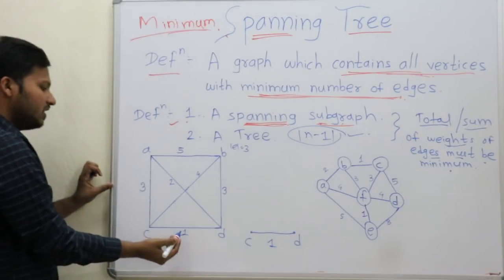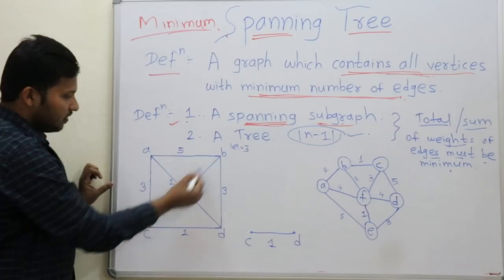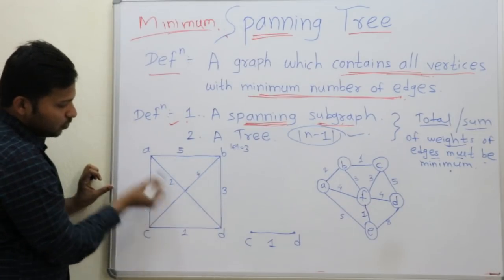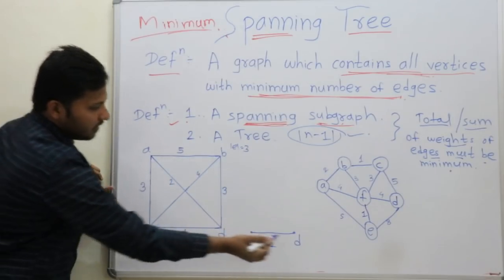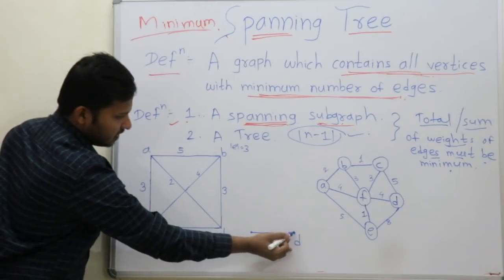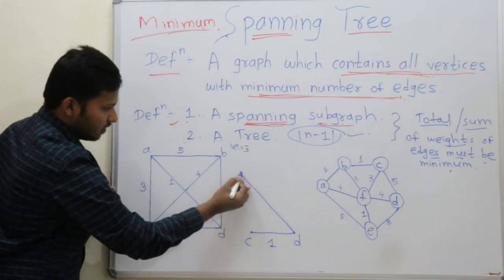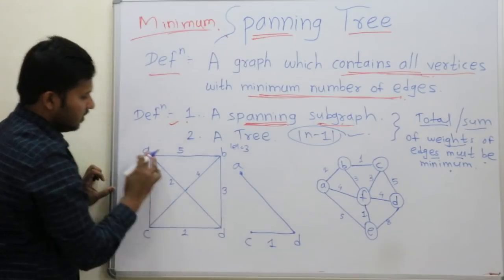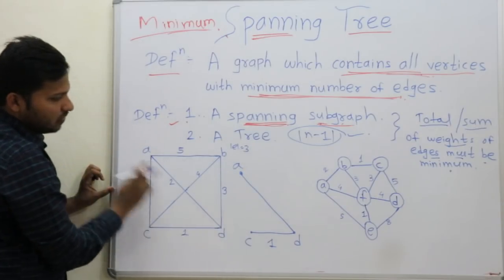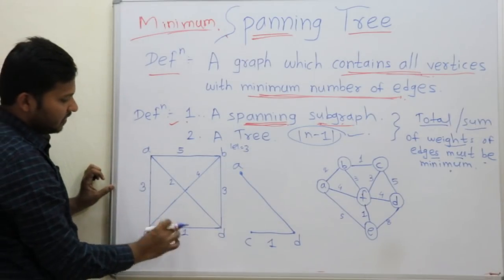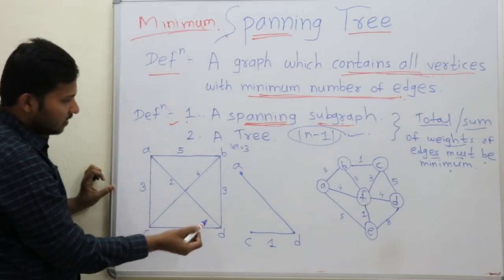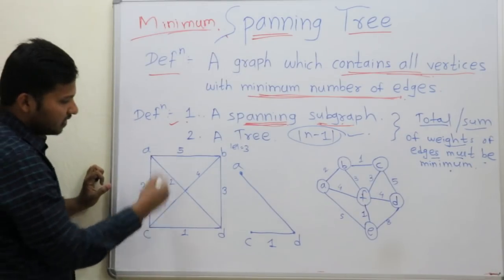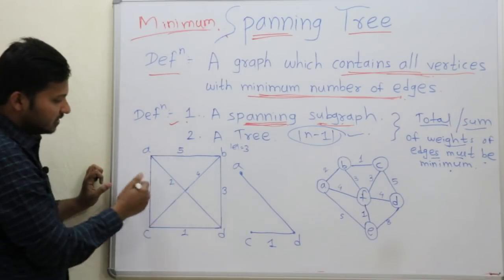After that, check what is the minimum weight. Minimum weight is 2, so that is edge A to D — A to D has weight 2. Then the minimum weight is 3 — after that the weight is 3.